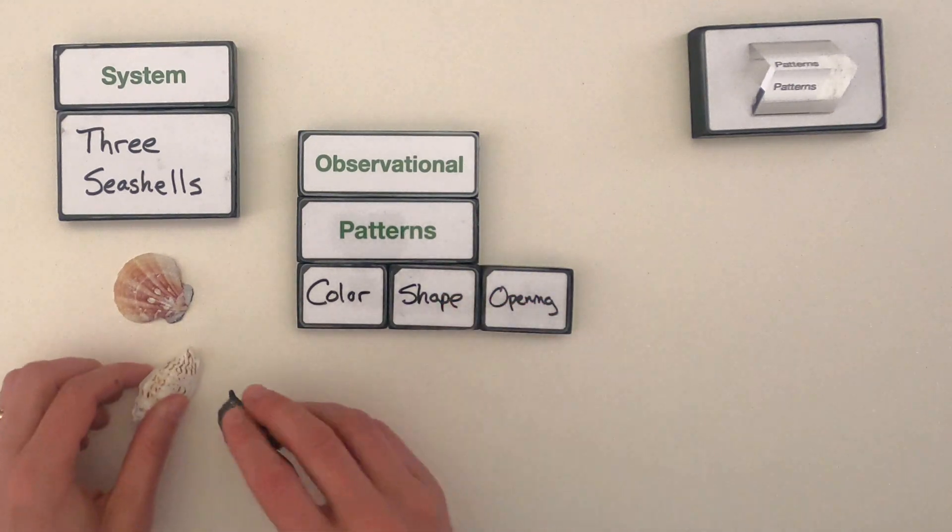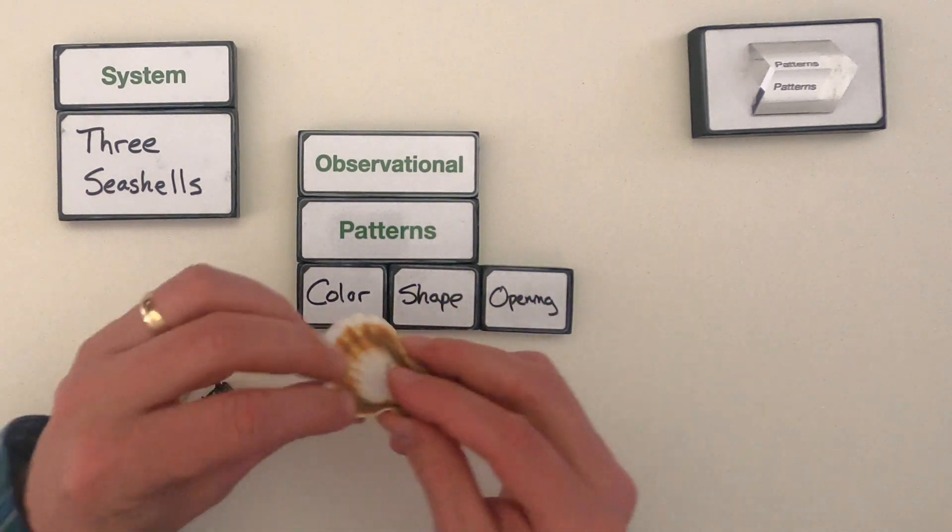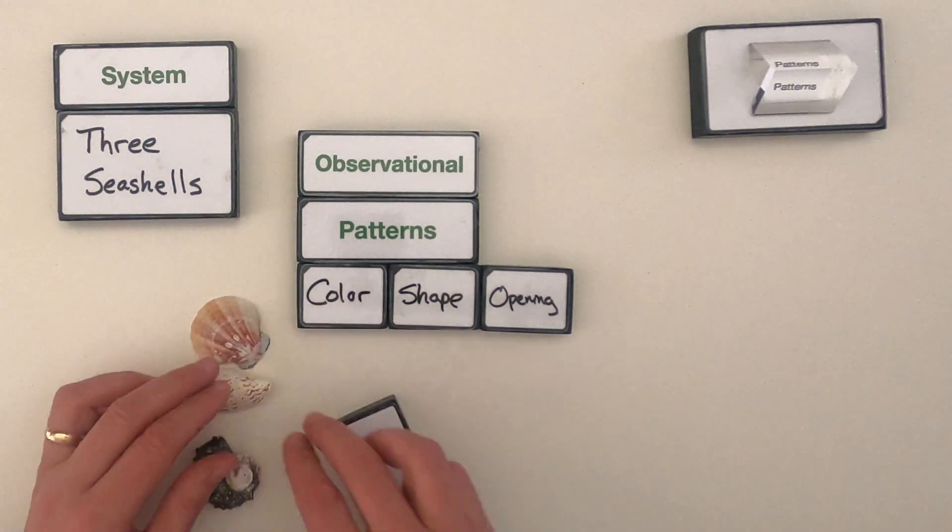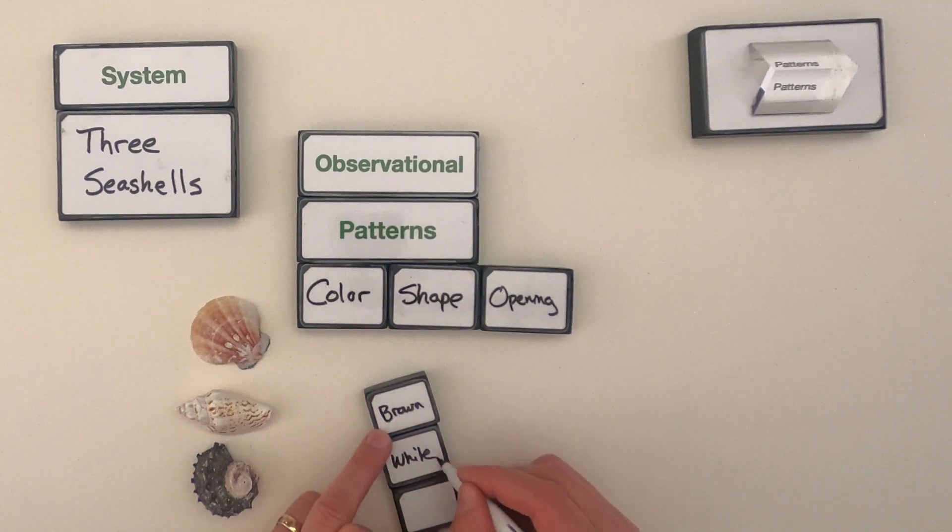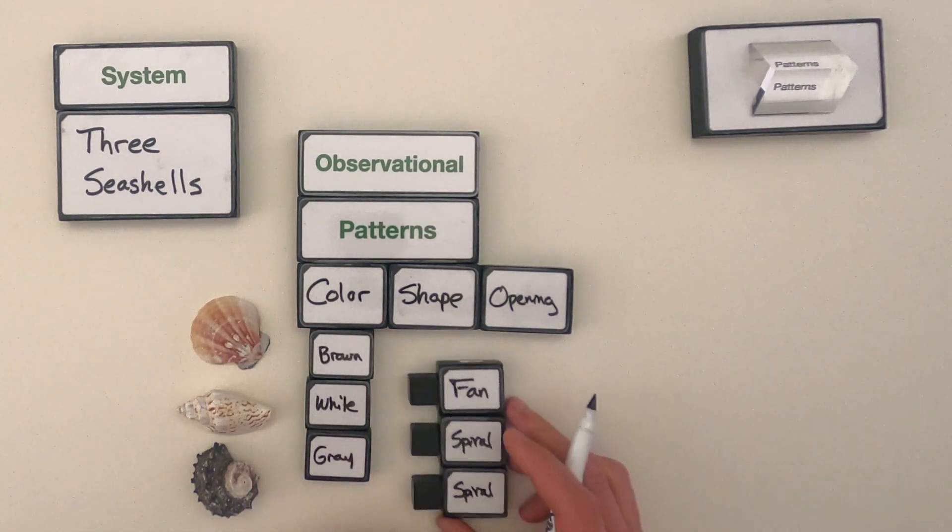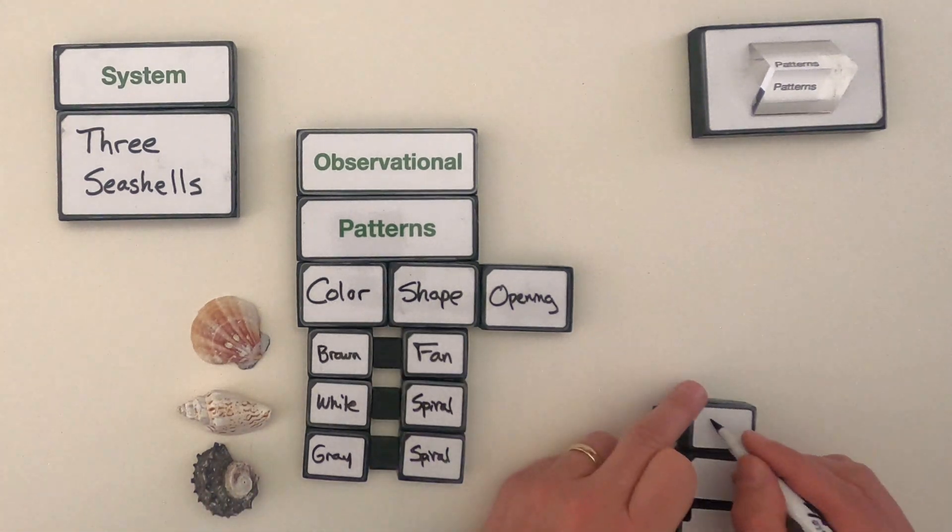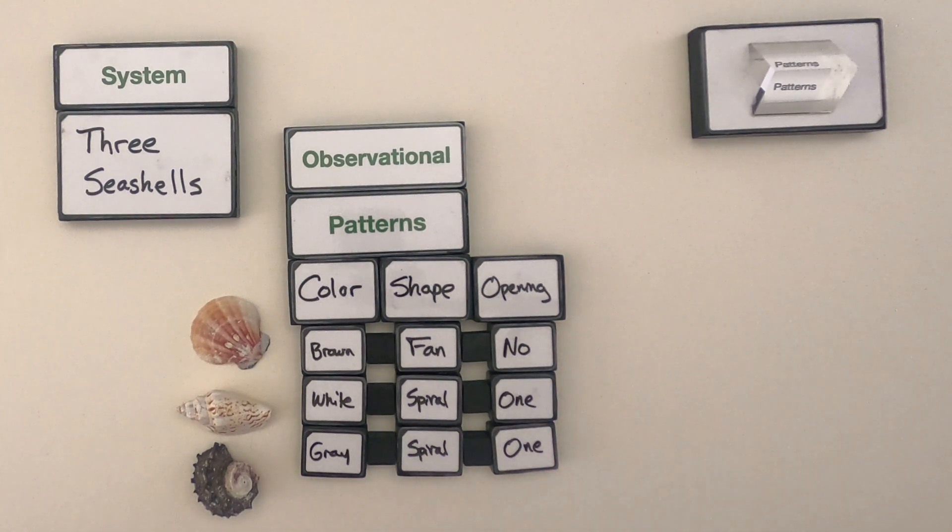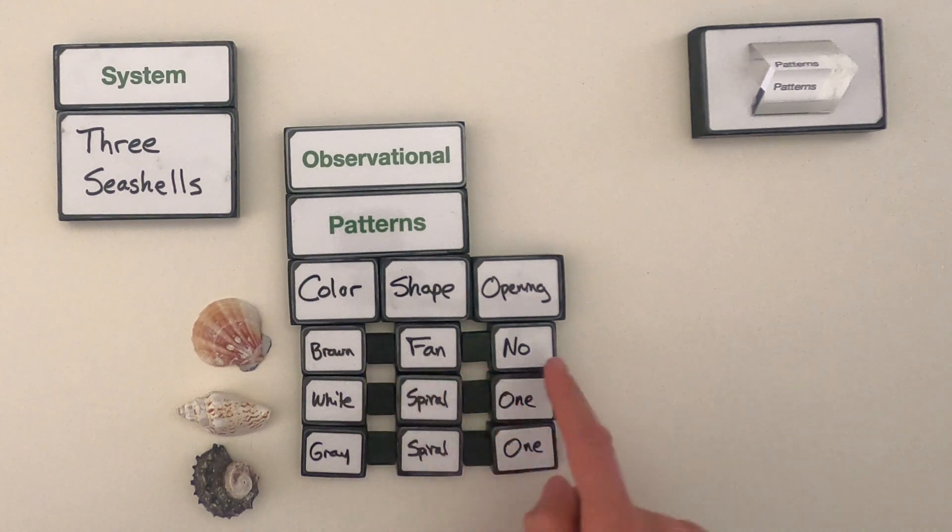These ones have openings, and this one, it looks like it's missing half a shell, but doesn't have an opening. So let me write those descriptors down below. What I've noticed is that, and I've lined them up on this side, we've got a brown, a white, and a gray shell. The brown one has a fan shape and no opening, whereas the other two are spiral in shape and then have one opening.